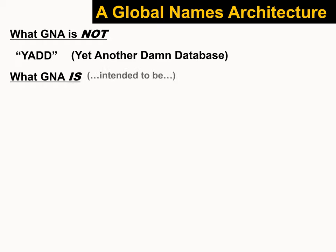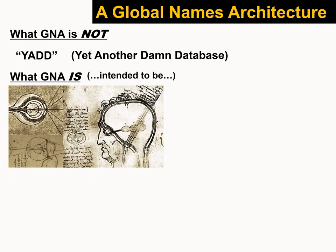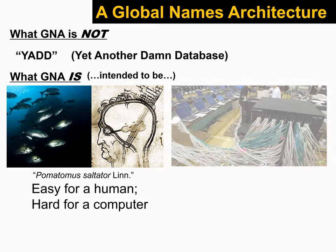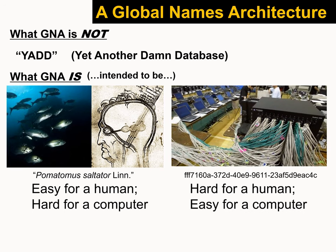What GNA is intended to be has to do with the difference between how humans perceive information and what computers perceive — something Greg touched on nicely. We humans work very well with text strings like scientific names. Taxonomists certainly do, and humans in general are much better able to link a text string like 'Pomatomus saltator Lin' to the notion of a group of fish swimming in the ocean. Computers have a hard time with that. But computers find UUIDs very easy to work with — they have no trouble memorizing, linking, and using those. So GNA's ultimate mission is to build the link between the human interface and the computer interface, so we can better leverage computer strengths to answer the questions we're interested in.